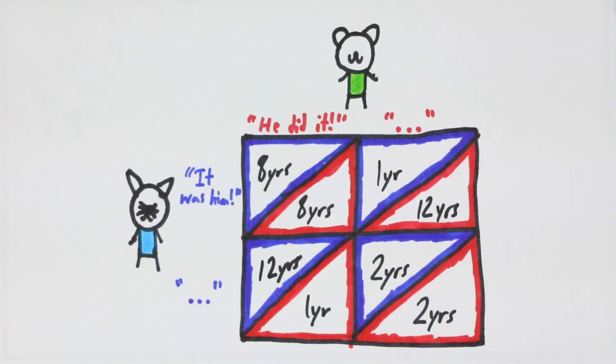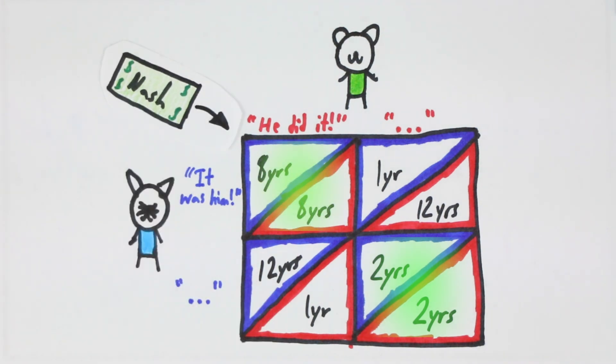It's obvious that the best choice for them both is to say nothing, while the safest option, which you may recognize as the Nash equilibrium, is to rat to prevent receiving the longest sentence.